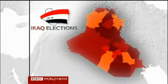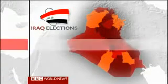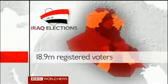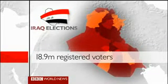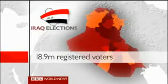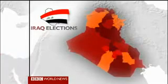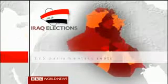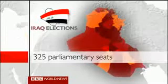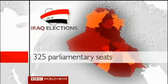There's been an increase in eligible voters since 2005, with 18.9 million registered out of an overall population of around 31 million. There's also been an increase in the number of parliamentary seats from 275 to 325 to reflect an estimated rise in population levels.